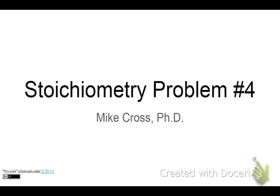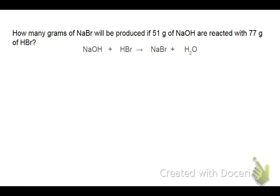Hello, everyone. My name is Mike Cross. Welcome to stoichiometry problem number four. On this one, we're going to be looking at a limiting reactant problem. So how many grams of sodium bromide will be produced if 51 grams of sodium hydroxide are reacted with 77 grams of hydrogen bromide, or hydrobromic acid?